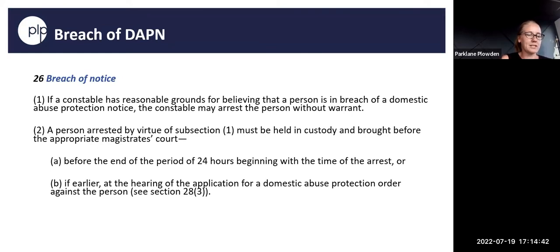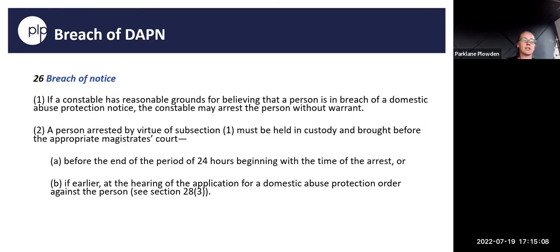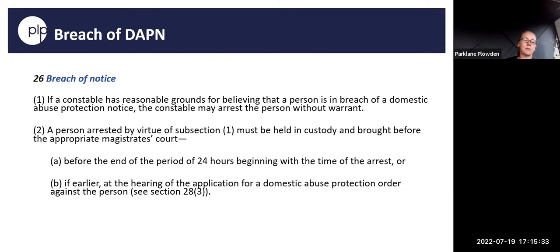If the police have reasonable grounds for believing that the person is in breach of the notice, the police may arrest the person without warrant. This is important in typical cases where the victim doesn't consent to police involvement — normally the police have to leave and return another day. However, with a breach of a domestic abuse protection notice, if the police issue and personally serve the notice and are then called out again by, for example, a neighbour, they can still arrest the perpetrator for the breach.